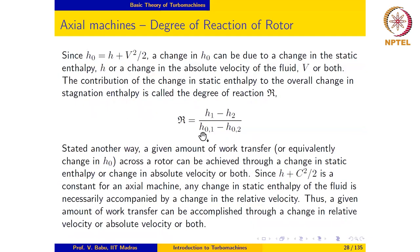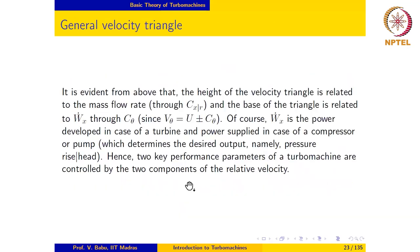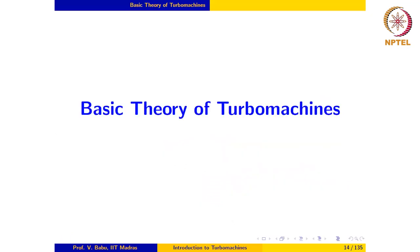The degree of reaction can vary between 0 and 1. If the degree of reaction is 0, then there is no change in specific enthalpy across the rotor and such machines are usually called zero-reaction or impulse machines. For a compressible working fluid, R equal to 0 simply implies that static enthalpy remains constant across the rotor. For an incompressible working fluid such as water, a change in specific enthalpy is equivalent to a change in pressure, so zero enthalpy change implies the pressure remains constant across the rotor. The Pelton wheel seen earlier is an example of such an impulse rotor.